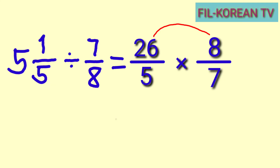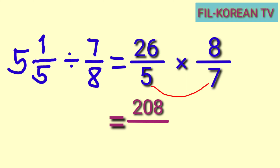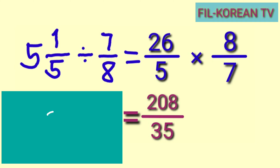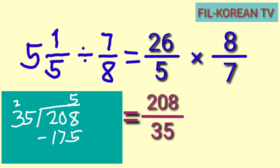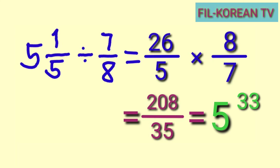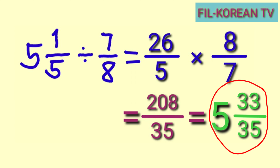Next we will multiply the numerators and multiply the denominators. 26 times 8 equals 208, and 5 times 7 equals 35. The answer is 208 over 35. It is an improper fraction so we need to simplify. Dividing 208 by 35, the answer is 5 with a remainder of 33. So the whole number is 5, the remainder 33 is the numerator, and we copy the denominator 35. The answer is 5 and 33 over 35.